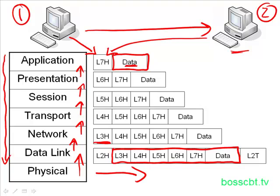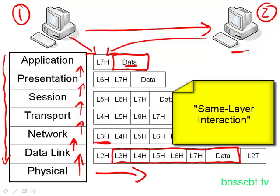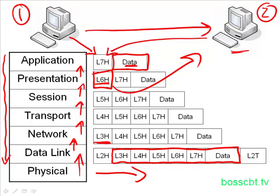This type of interaction is called same layer interaction — another term to note. Whereas adjacent layer interaction describes each layer working with the layer above and below it, same layer interaction refers to the same layer on two different devices working together. For example, the information prepended by the presentation layer on PC1 is the information used by the presentation layer on PC2. That's how they're interacting, and that's why information is added at each step of the data communication process.